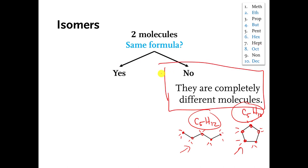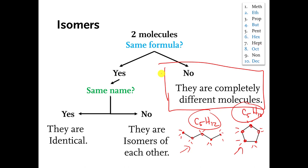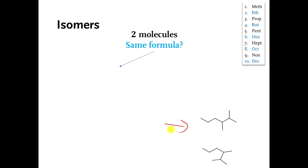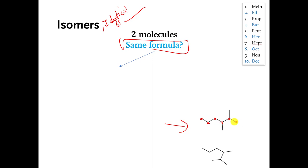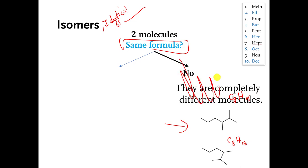Here's one more example. Here are two molecules — are they isomers, identical, or totally different? Do they have the same formula? Counting the carbons: the first molecule has 8 carbons, and the second molecule also has 8 carbons. They both have 18 hydrogens, so they have the same formula C8H18. The answer to the first question is yes.